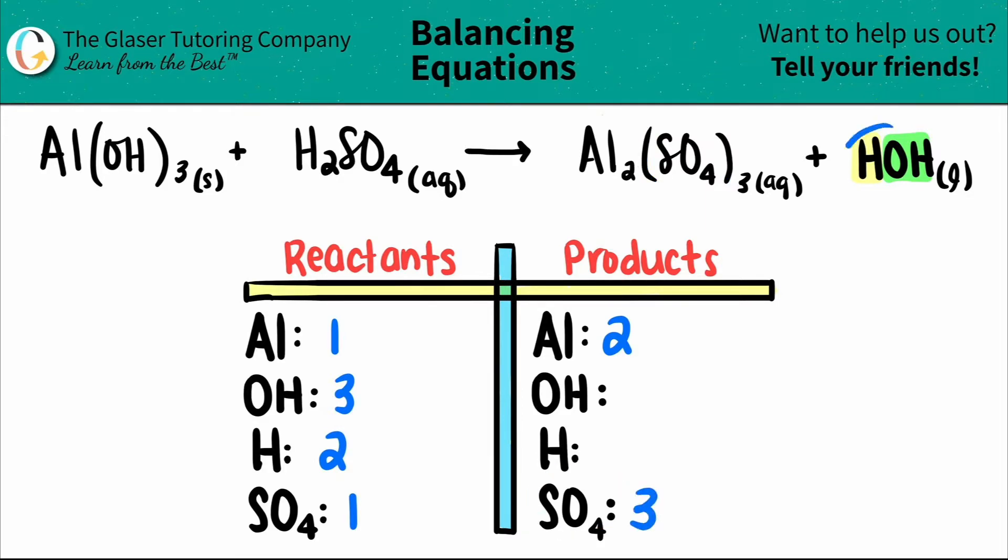And then coming over to the water, aka HOH, I have one H and I have one OH. I don't see any subscripts, right? So that's secretly a one. So I have one for both OH and H.